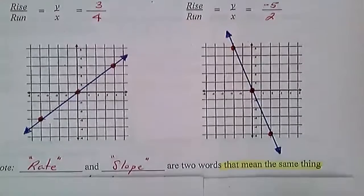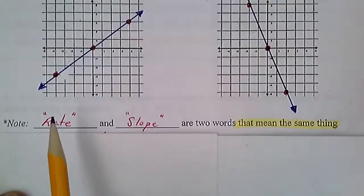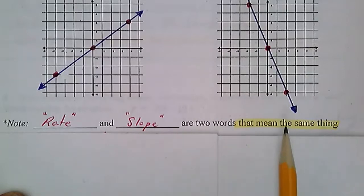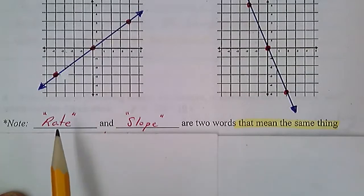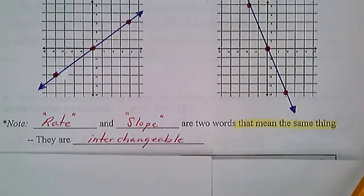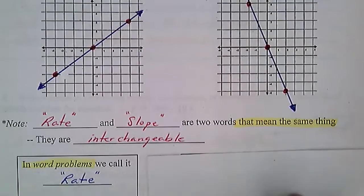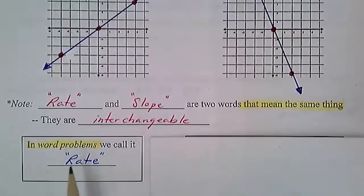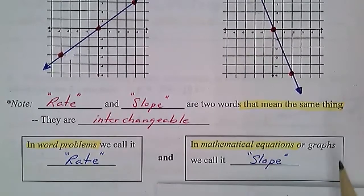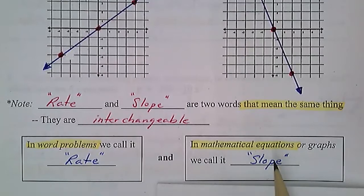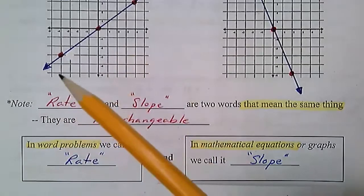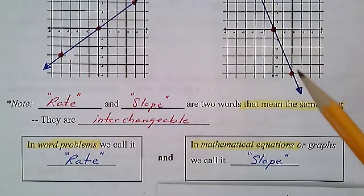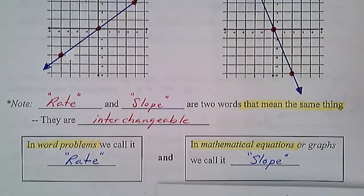Rate and slope are two words that mean the same thing — they are identical, interchangeable, like nicknames for one another. If we're looking at a word problem, we call it a rate. If we're looking at a mathematical equation or a graph, we call it a slope. They mean the same thing.